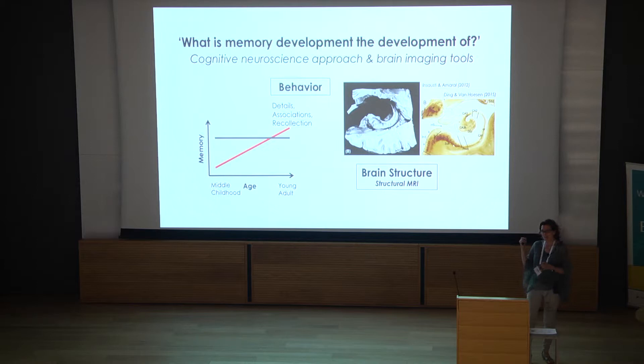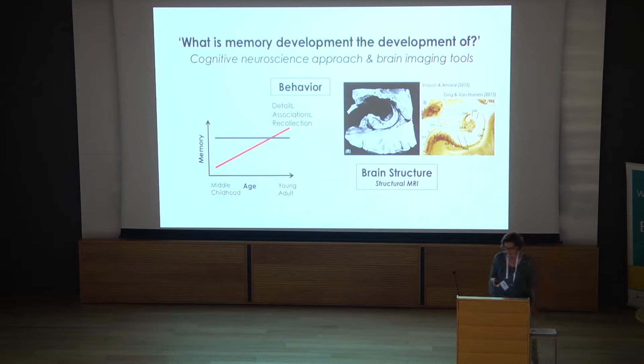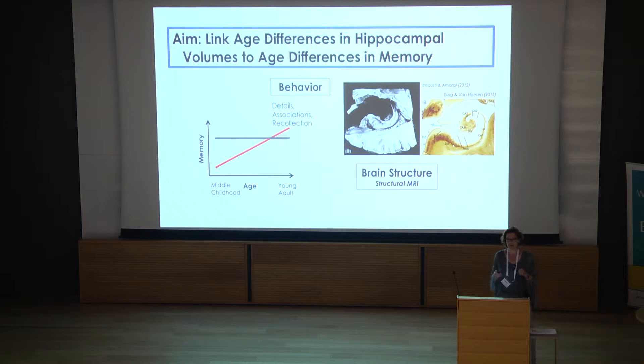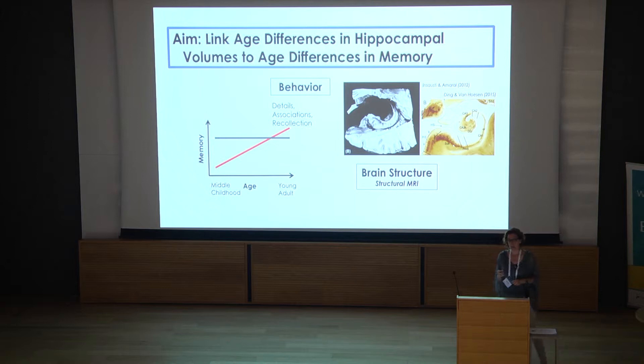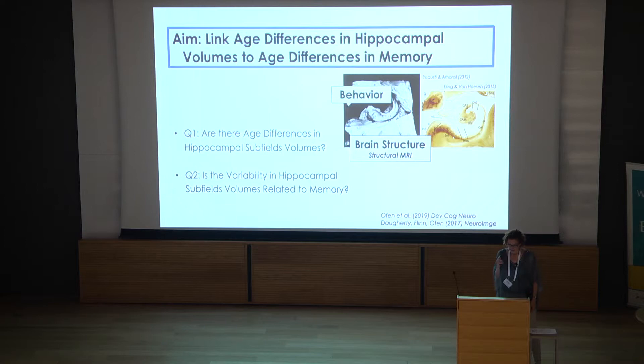These are cytoarchitectonically identified units — they stain differently, meaning they have different cell composition. To make it more specific: the question I'm now trying to answer is, can I link age differences in hippocampal volume to age differences in memory — specifically the memory aspects I've just shown you?